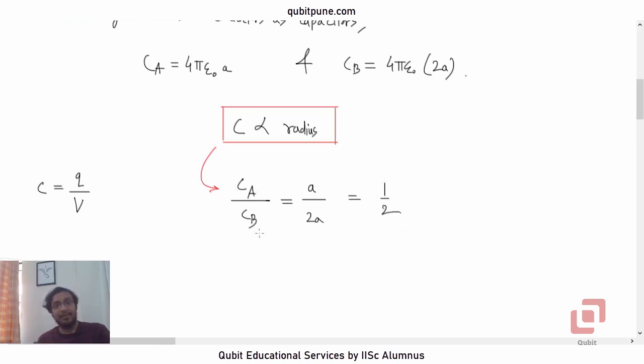But what is CA? CA is QA divided by VA. And what is CB? It is QB upon VB. So that will also be equal to 1/2.